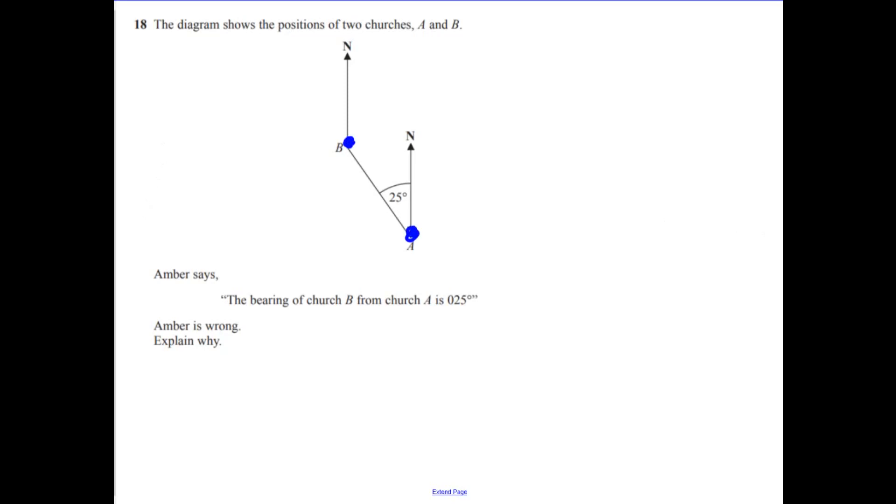A bearing of church B from church A, according to Amber, is 025 degrees. Amber is wrong. Explain why.